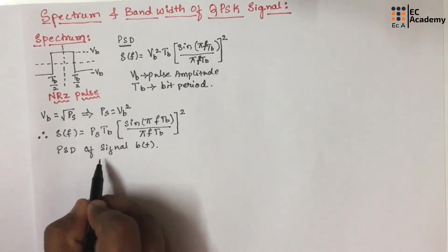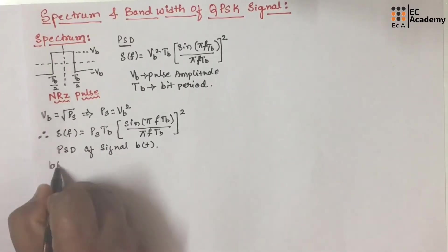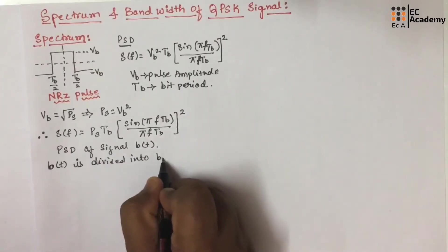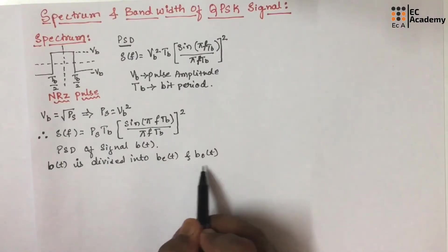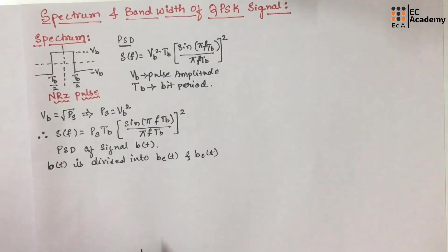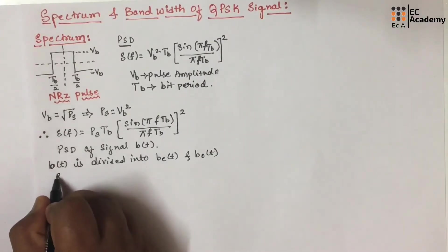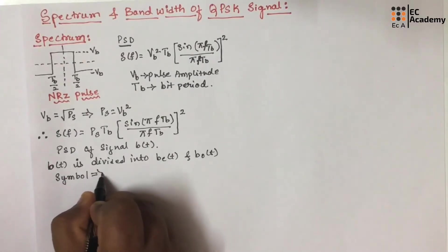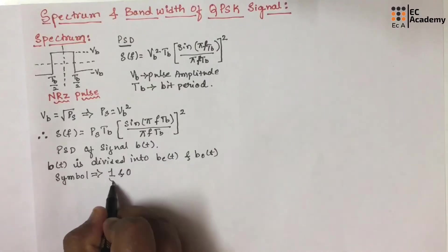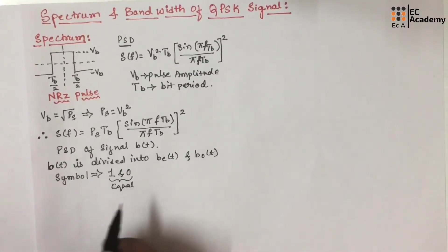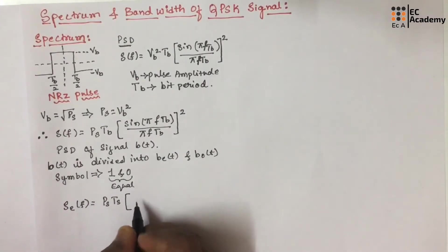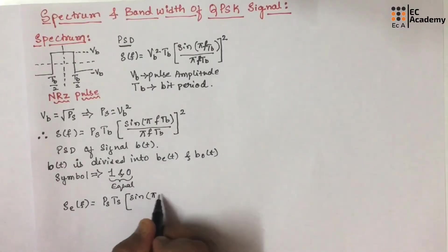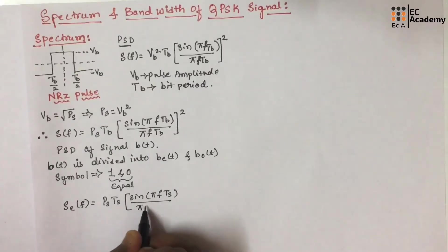The above expression is the power spectral density of signal B(t). In the case of QPSK signal, B(t) is divided into B_even(t) and B_odd(t). If we consider symbols 1 and 0 which are equal in a given sequence, then we can write S_even(f) = PS · TS · [sin(πfTS) / (πfTS)]².